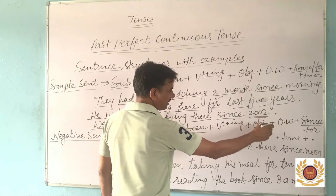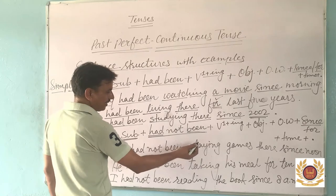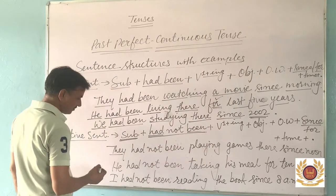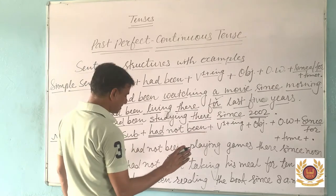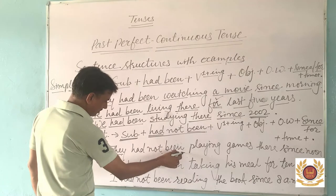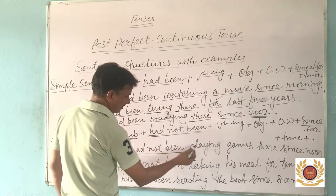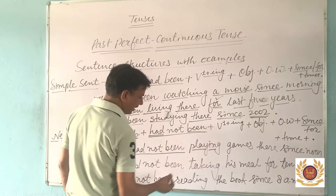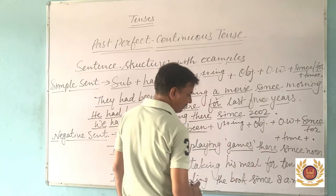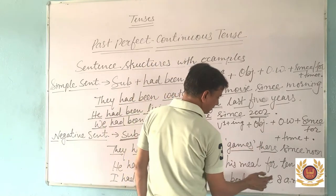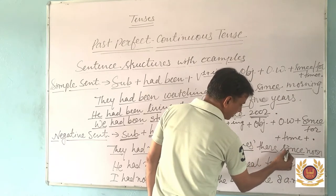Example of a negative sentence: 'They had not been playing games there since noon.' In this sentence, the action of playing games was going on with a point of time in the past. 'They' is the subject, 'had not been' is used here — 'not' is set between 'had' and 'been'. First form of verb is 'play' with '-ing' as 'playing', 'games' is the object, 'there' is another word, 'since' is the adverb, and 'noon' is a point of time.